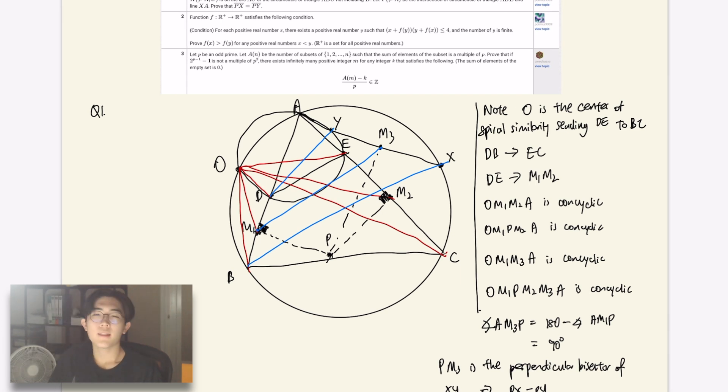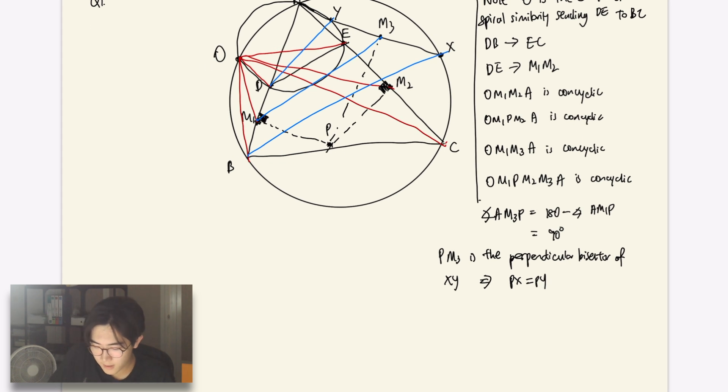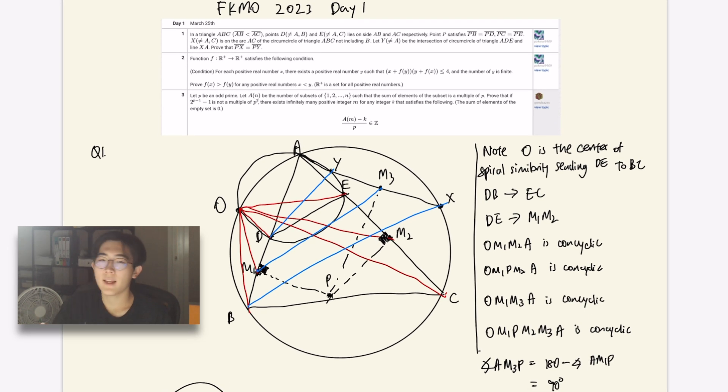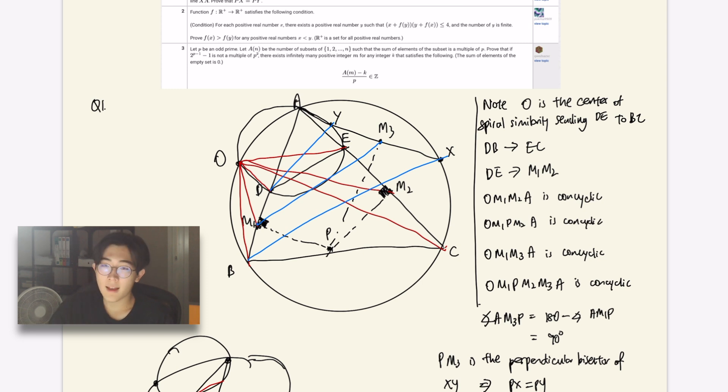So in summary, two main things that you should take note of is that you should firstly identify the spiral similarity once you see the configuration of this, where you have two overlapping circles, and then you have two lines originating from here. Then this will be the spiral center sending this line to this line. And secondly is that in order to tackle isosceles type conditions, a very useful way is to consider showing that it's the perpendicular bisector instead. Since perpendicular bisectors lead to the formation of right angles and midpoints, which is very easy to induce similar triangles and cyclic quadrilaterals, which are much easier to show than length conditions themselves.